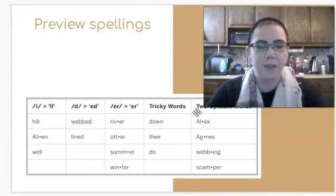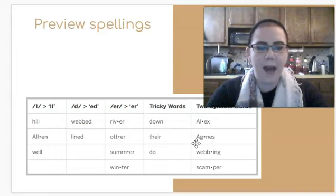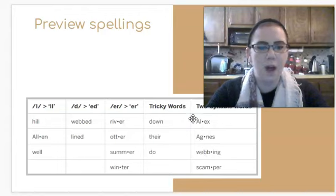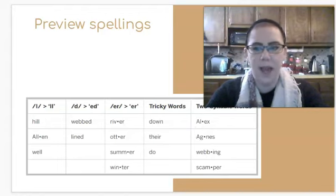And two syllable words. Remember, we want to chunk them when there's two syllables. Alex. Agnes. Webbing. Scamper. Those two have capital A's too, so maybe those are names of more people in this story today.